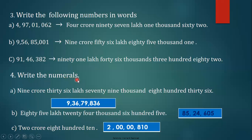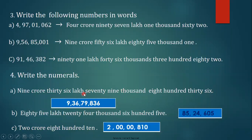Next question: write the numerals. The numbers given in words must be written as numerals. The given words are: nine crore, thirty-six lakhs, seventy-nine thousand, eight hundred and thirty-six. You can write from the ones period, thousands period, lakhs period, and crore period. Eight hundred and thirty-six is the ones period — write 836, comma. Seventy-nine thousand is the thousands period — write 79, comma. Thirty-six lakhs — write 36, comma. Then nine crore — write 9. You can write both ways: left to right or right to left.